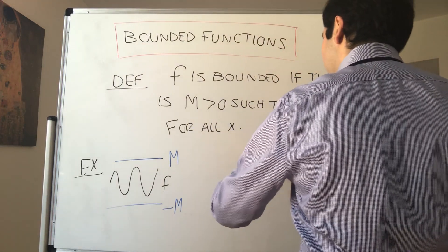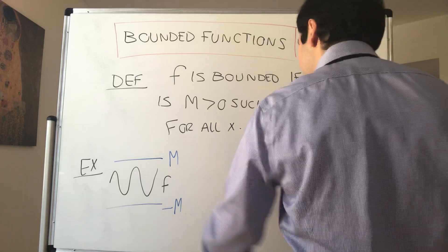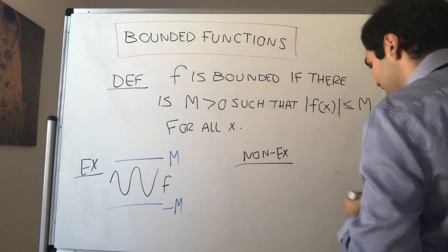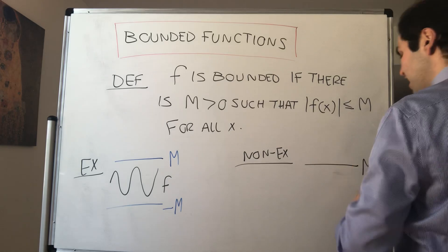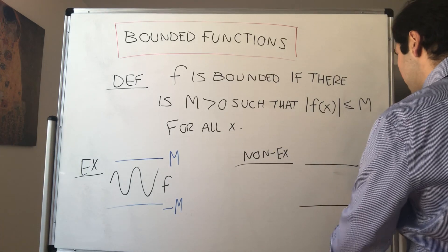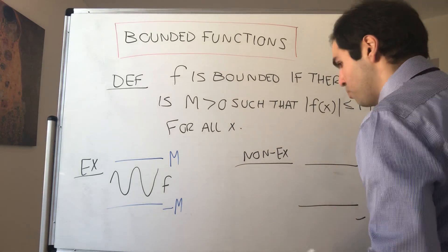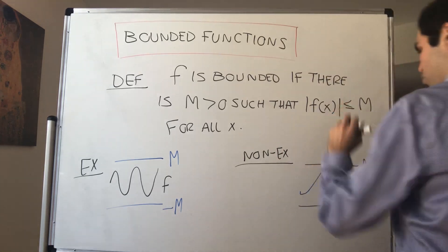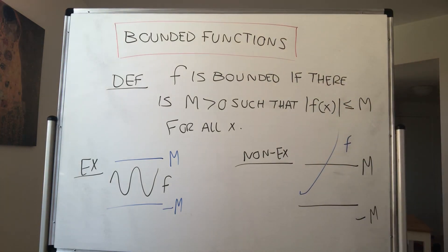But a function that's not bounded kind of shoots off to infinity in some sense. So no matter which M I give you, the function just blows off here. This is a function that's not bounded.